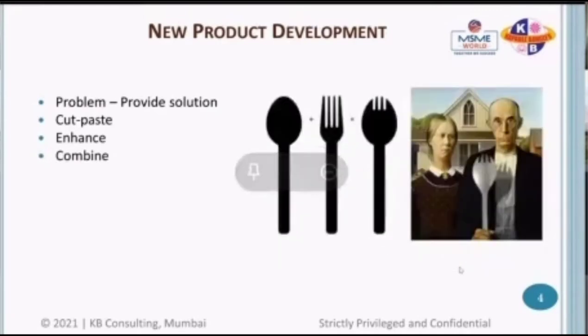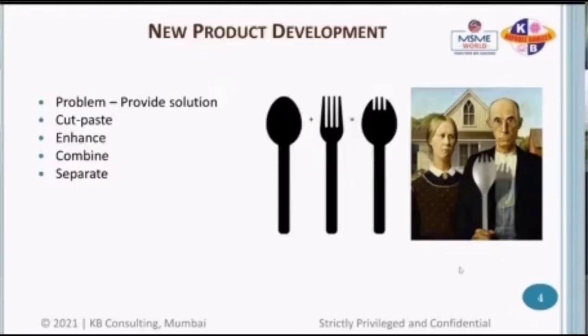Another good example is 'combine.' There was a spoon and a fork — both existing products. Somebody created a product called a 'spork,' which is a combination of a spoon and a fork. This is a great idea: you combine several features to create a new product.